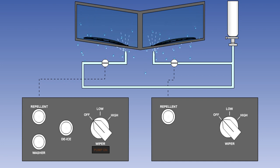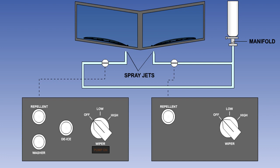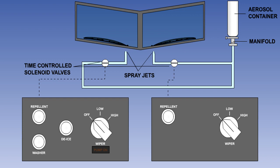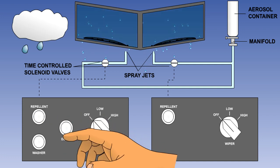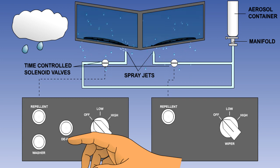Rain repellent fluid should only be applied to the screen during very heavy rain. In a typical fluid rain repellent system, there will be a nozzle for each screen and a manifold which stores and distributes the fluid to the nozzles. The manifold is charged with repellent fluid from an aerosol type disposable container which screws into it. Electrical time controlled solenoid valves control the flow of fluid to the nozzles. Rain repellent fluid is sprayed onto the respective windscreen by momentarily pressing the rain repellent button switch on the captain's or first officer's wiper control panel. Each actuation of the switch opens the valve for a preset period of time, regardless of how long the switch is held in.